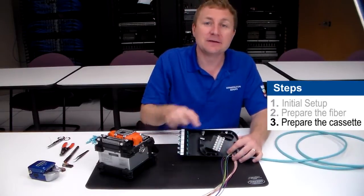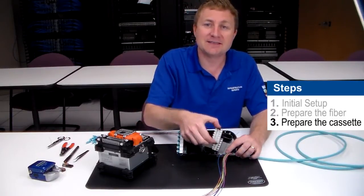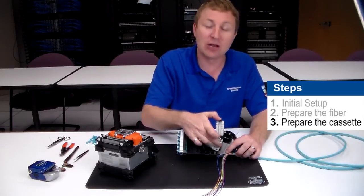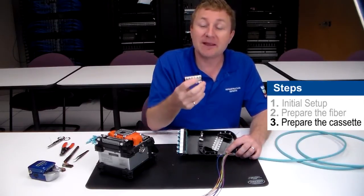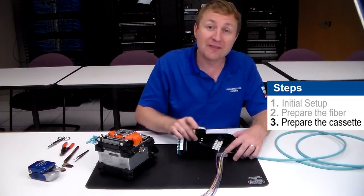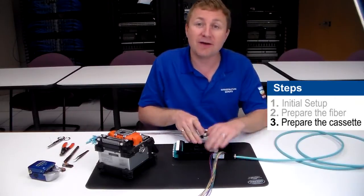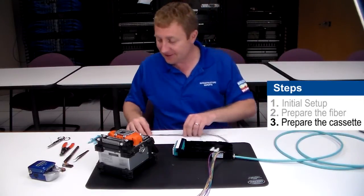The other thing you're going to notice is the picnic table inside the splice cassette. There's an upper level and a lower level for the splice chips. What we're going to want to do is remove the upper level because we're installing the first 12 fibers, we're going to put those in the lower level. I'm going to set that aside until later.